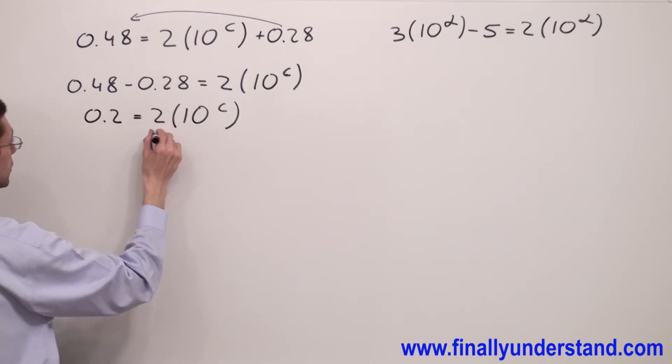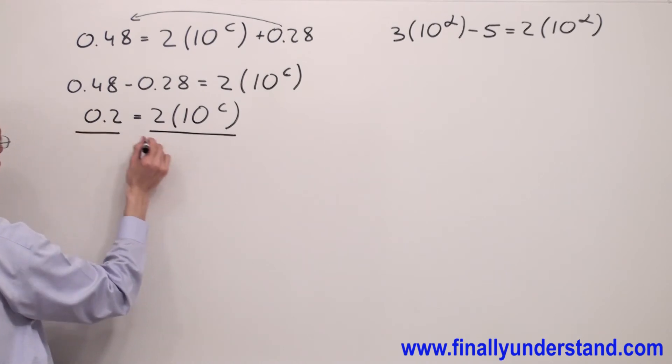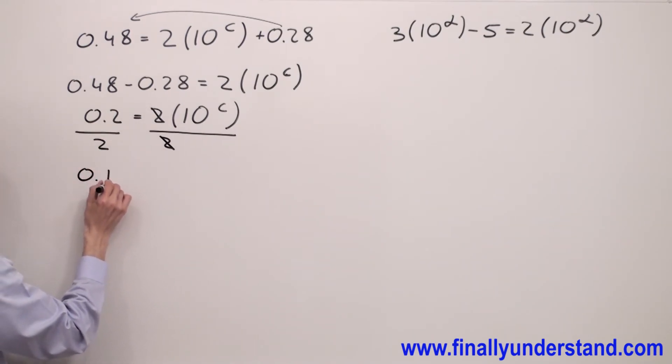Divide both sides of the equation by 2. Two and 2 will cancel out. 0.2 divided by 2 is 0.1 equals 10 to C.